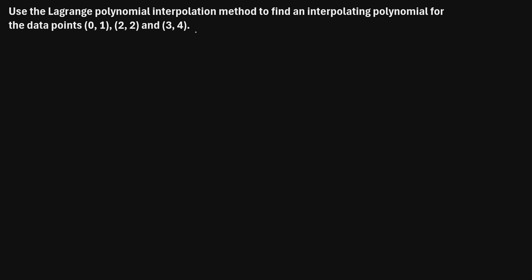Use the Lagrange polynomial interpolation method to find an interpolating polynomial for the data points (0, 1), (2, 2), and (3, 4). So here's the idea: we're given three data points, or three x-y coordinates, and we want to find the formula for a polynomial that will go through each of these three data points.